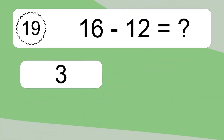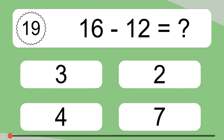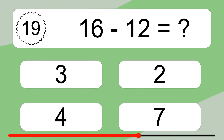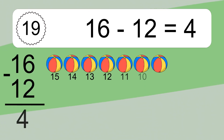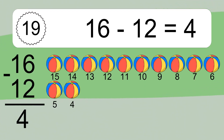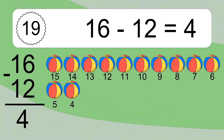16 minus 12 equals what? 16 minus 12 equals 4. Let's count it. 15, 14, 13, 12, 11, 10, 9, 8, 7, 6, 5, 4.